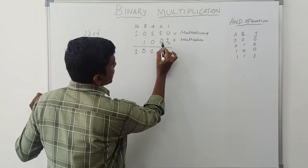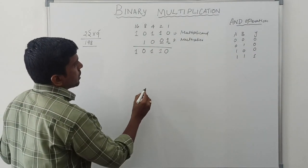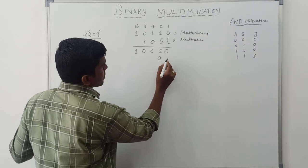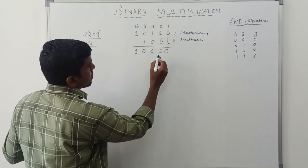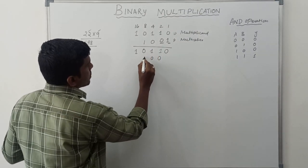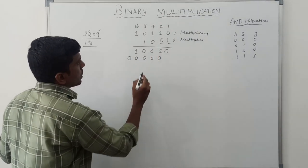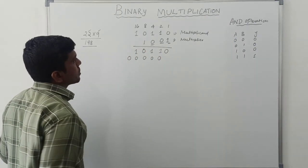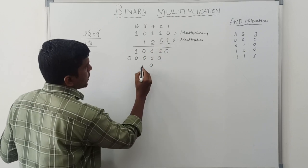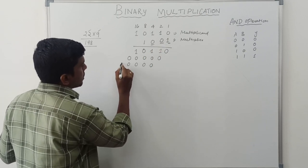The next multiplier bit is 0. This 0 is multiplied with all the multiplicand bits, so 0·0=0, 0·1=0, 0·1=0, 0·0=0 — all bits are 0. The next multiplier bit is also 0, so once again multiplying this term with the multiplicand, all the bits are 0.